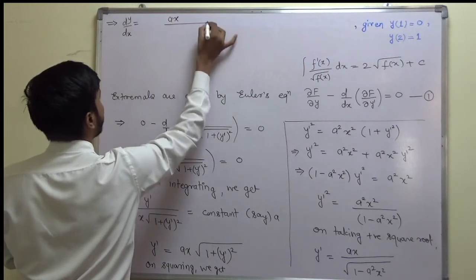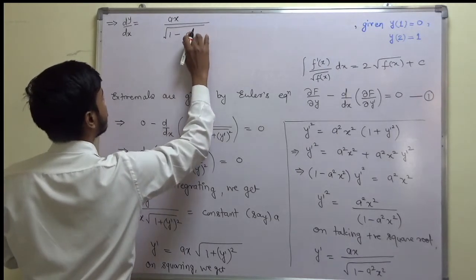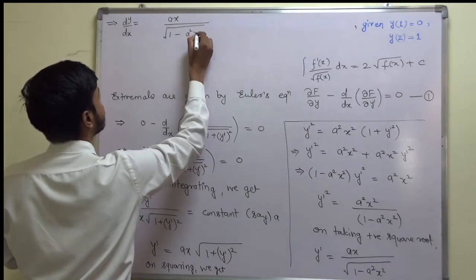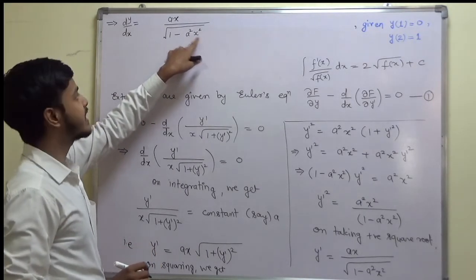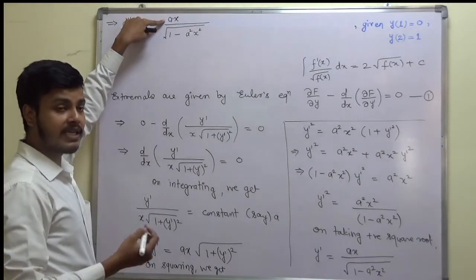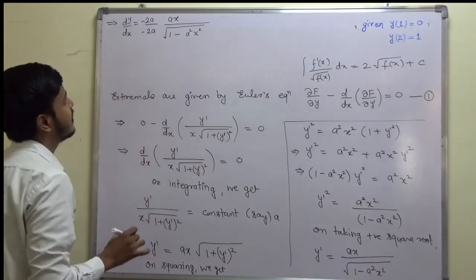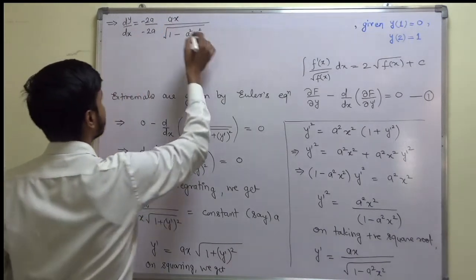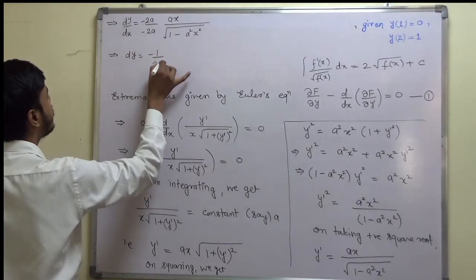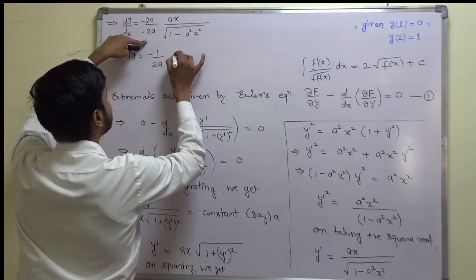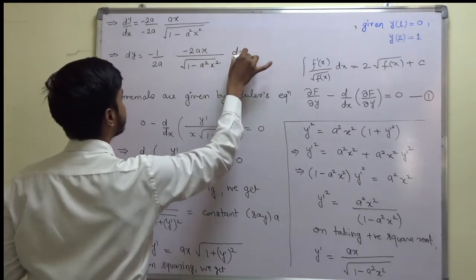Writing dy/dx = ax / √(1 − a²x²), we adjust to match the formula by multiplying and dividing by −2a, giving dy = (−1/(2a)) · (−2a²x / √(1 − a²x²)) dx.